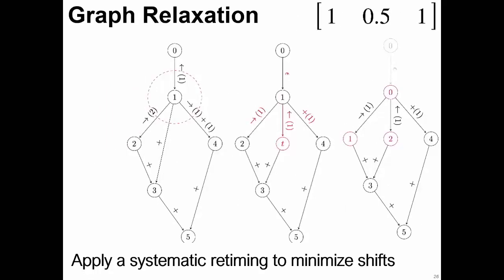We also apply a technique called graph relaxation, essentially the same as re-timing known from integrated circuit design, which has found great adoption in industry. In IC design, re-timing moves latches around the computational graph to minimize the critical path length. For us, we move computations to different processor locations on the chip to minimize data movement. In our example, we eliminated three shifts but had to introduce one more, saving a net of two — yielding slightly better results overall.